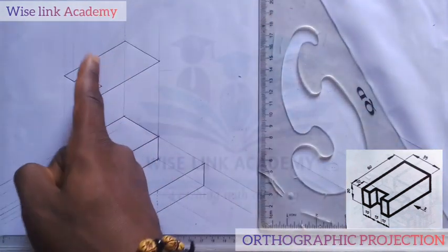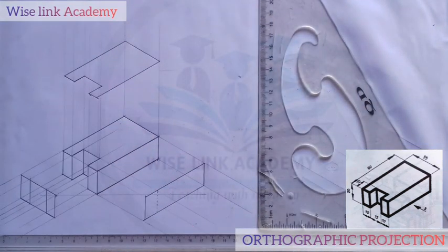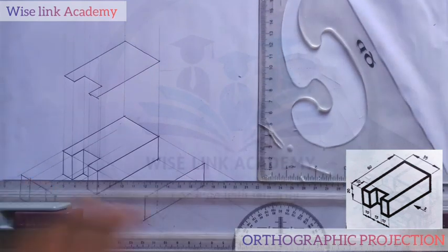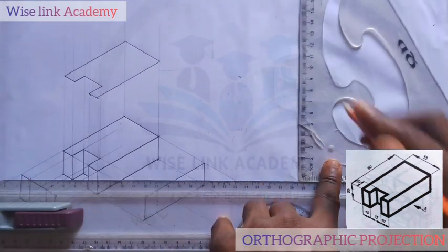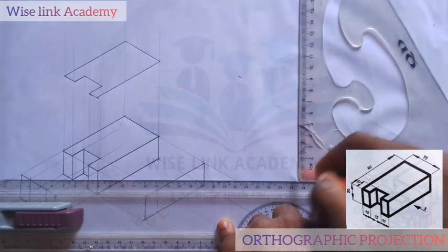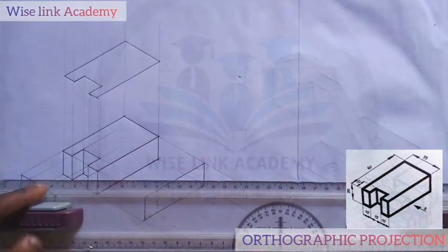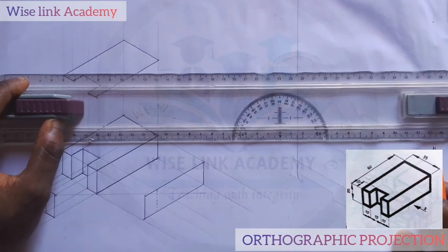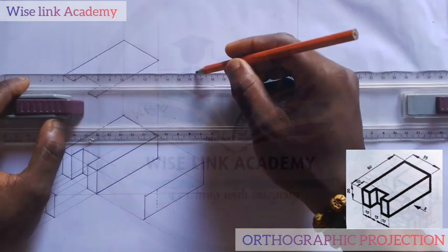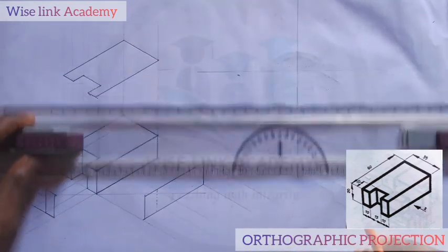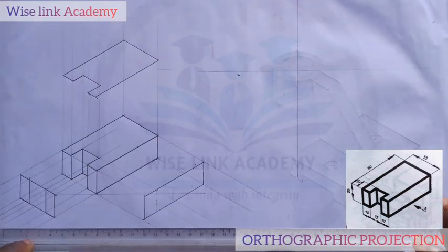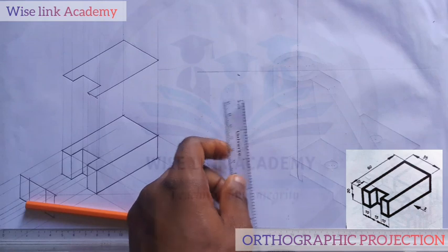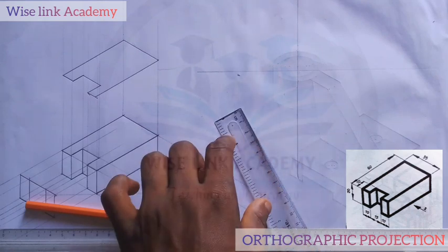So let's draw the orthographic projection. To draw the orthographic projection, let's draw the orthographic axes. So take it this way, and also I'll take it down this way. I've done that. I'll take my compass. What we are doing is called orthographic axes.